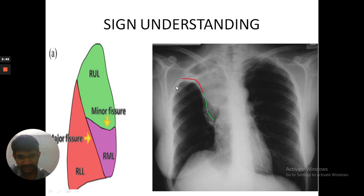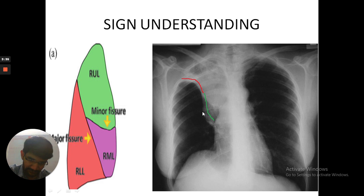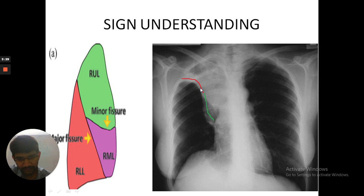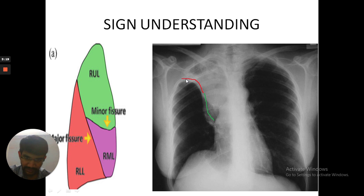But in Golden's sign, come to the image on the right side of the screen. As you can see, there is an S-sign or a reverse S-sign here — this is known as Golden's sign. The red color portion is concave inferiorly and the green color is convex inferiorly, representing the minor fissure.